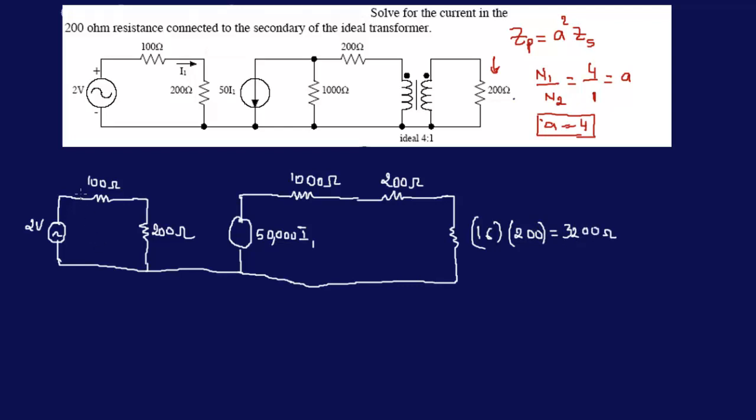And use KVL to find our things that we need to find. Remember, that the question was to find the current over here. Okay, so now we have an I2 here. This was plus to minus here. We can assign going through this direction, plus, minus, plus, minus. Here we can have plus, minus.